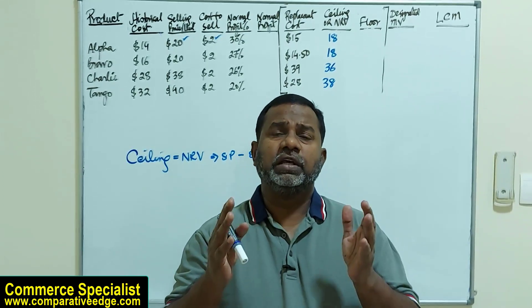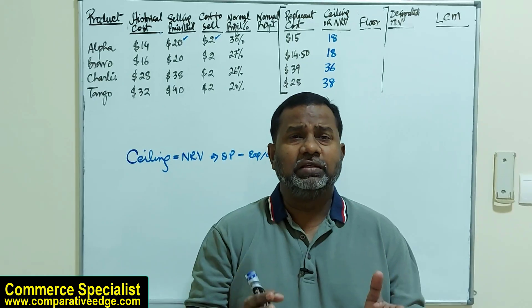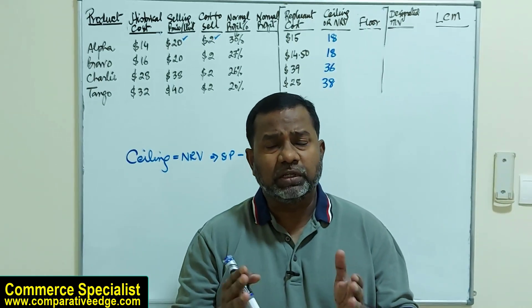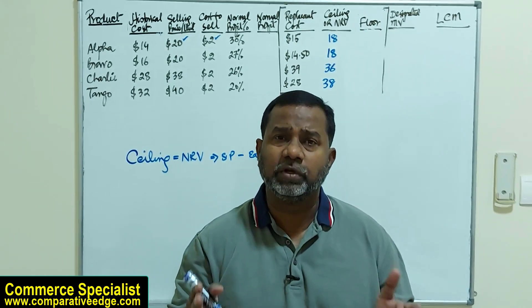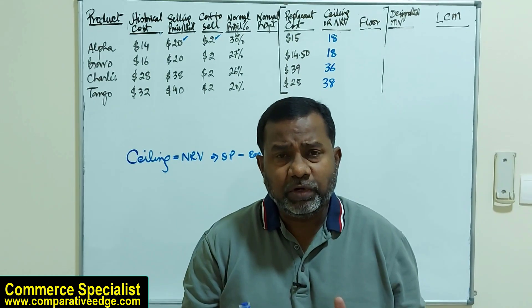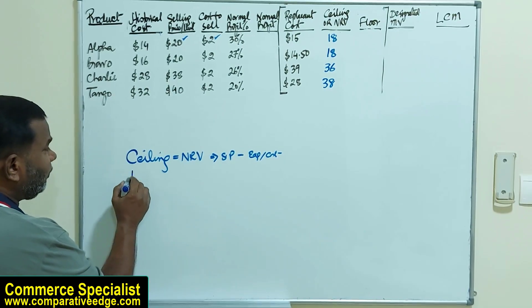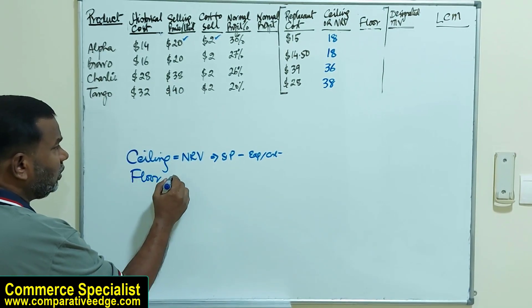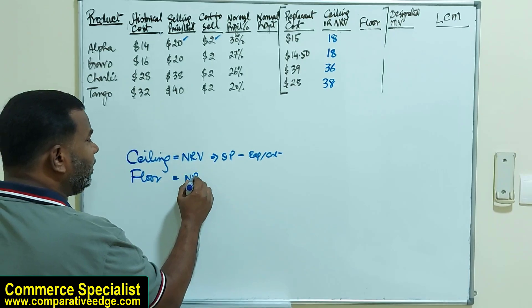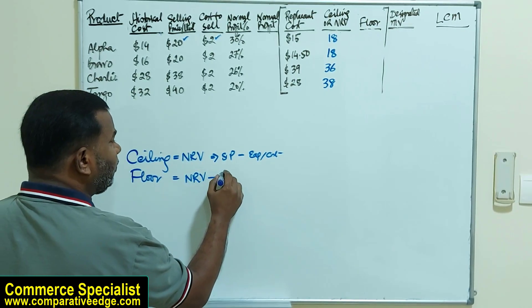As per ASC 330, ceiling is basically called net realizable value, which is estimated selling price minus necessary cost and expenses to make the sale possible. The next important element we need to calculate is called floor. Floor is basically NRV minus normal profit.